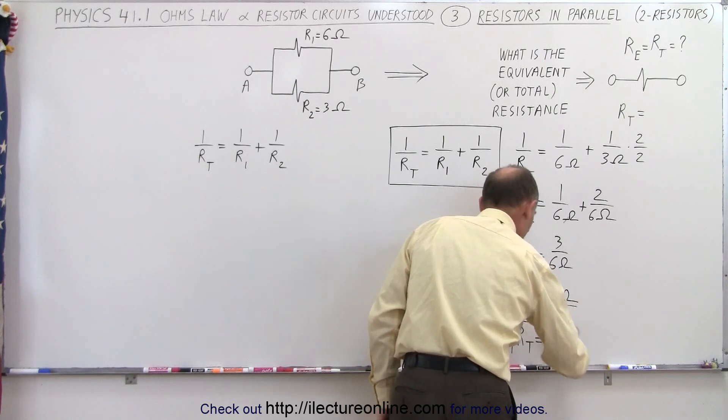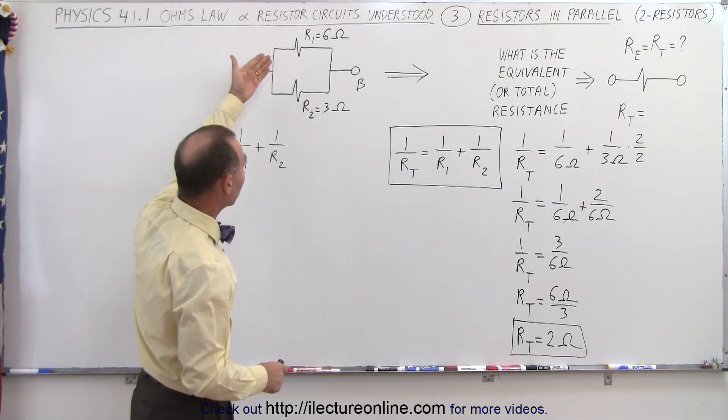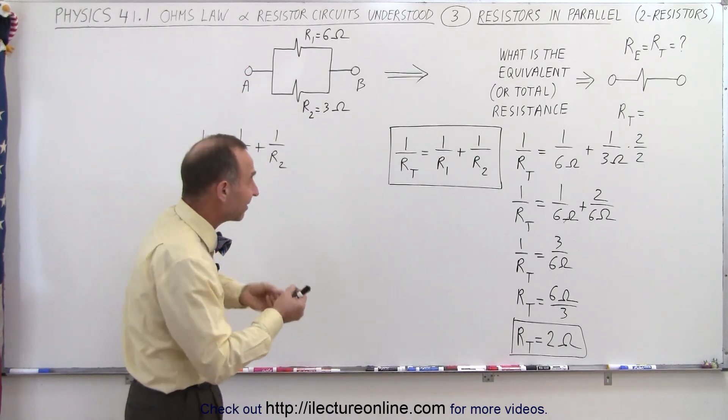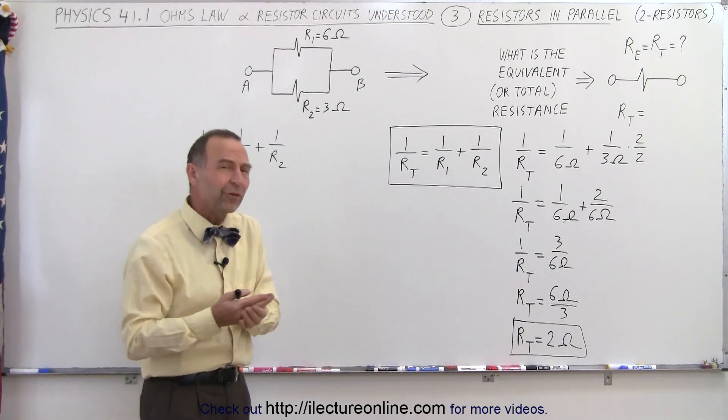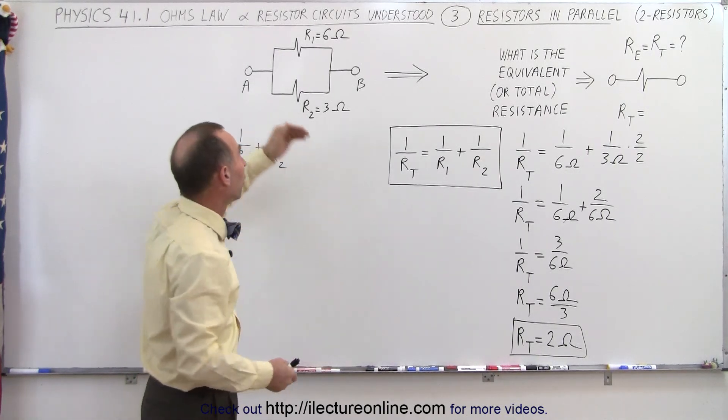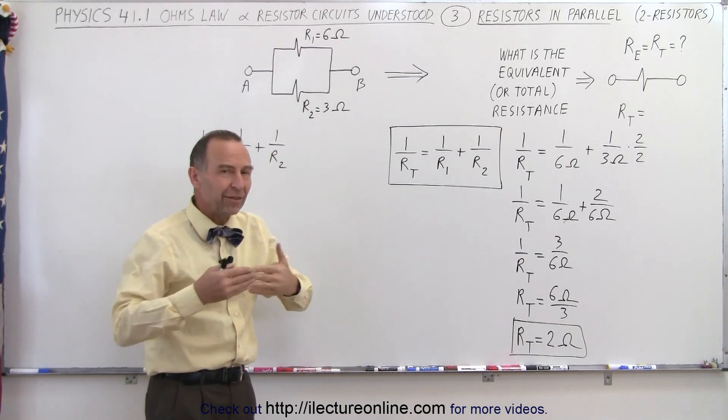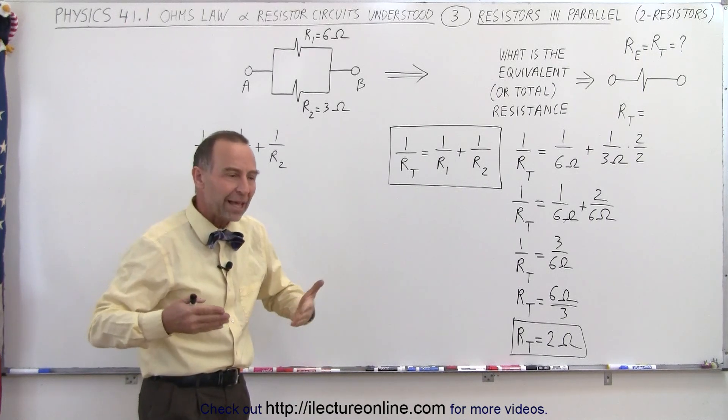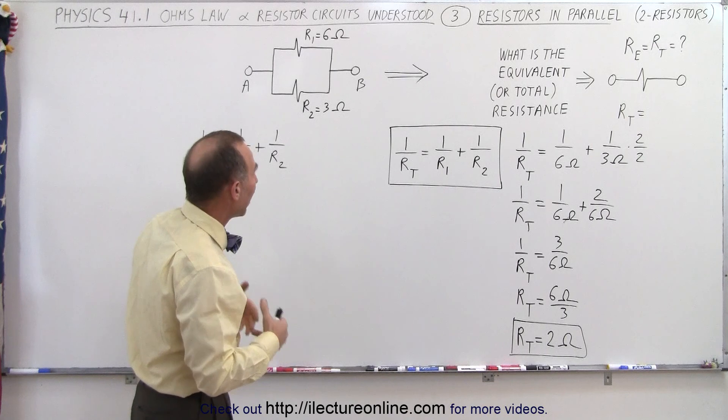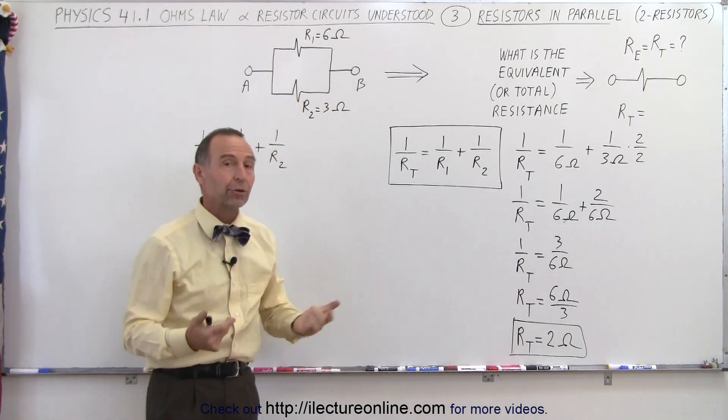Now notice that it's less than either one of the two resistors. We had a 6 ohm resistor, a 3 ohm resistor, and combined, the total equivalent is less than either one of them. The reason for that is because now what we have is we have two parallel paths. The current can either choose the top branch or the bottom branch. And therefore, since there's more paths for the current to take, it lowers the overall resistance to the current flow. And more total current will flow if there's more than one path for the current to take.